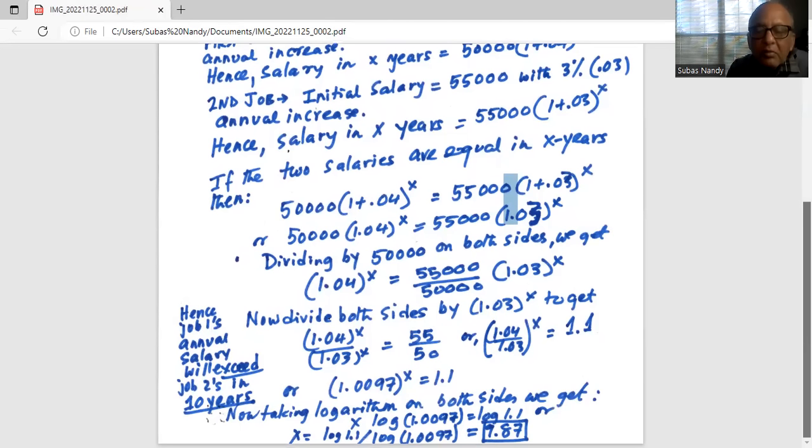Now we divide by logarithm of 1.0097 on both sides to get X equal to logarithm of 1.1 divided by logarithm of 1.0097, which works out to 9.87.